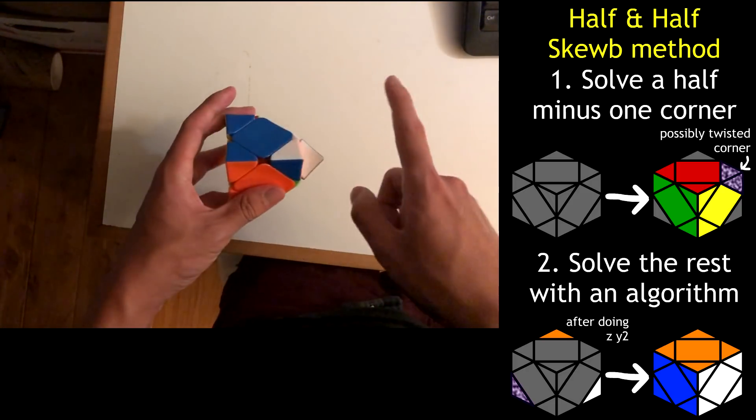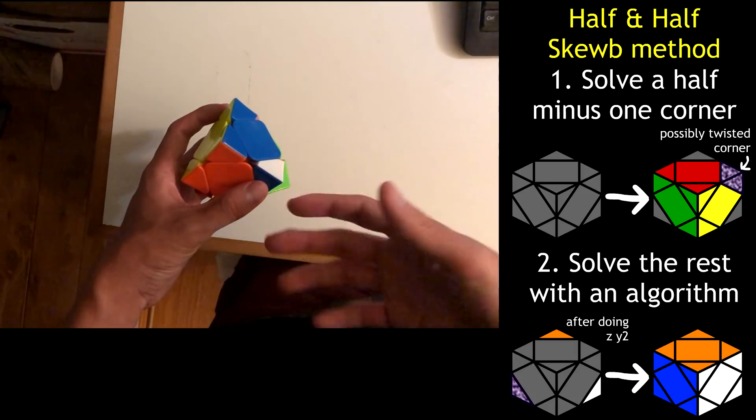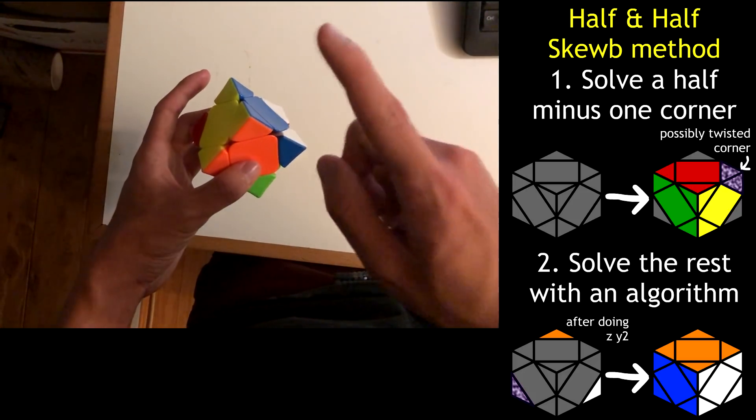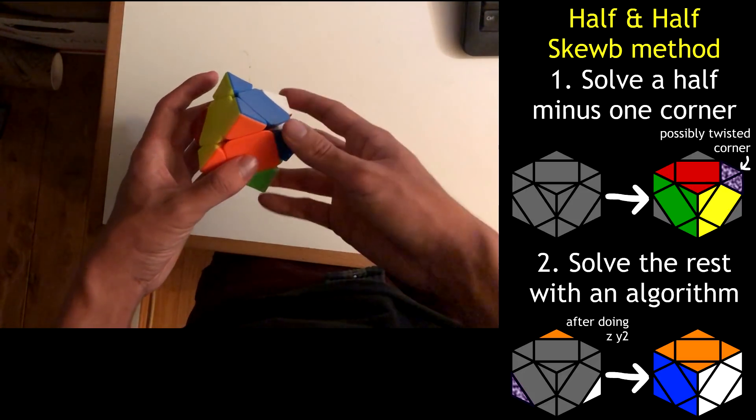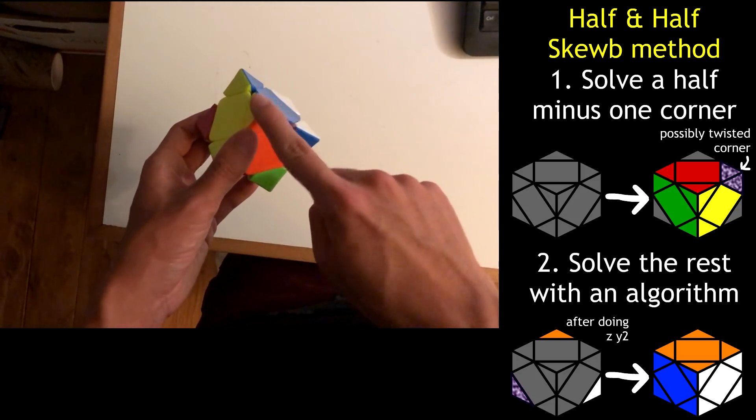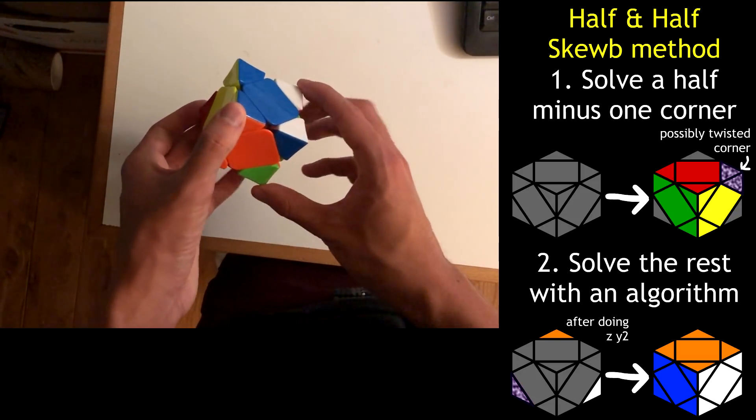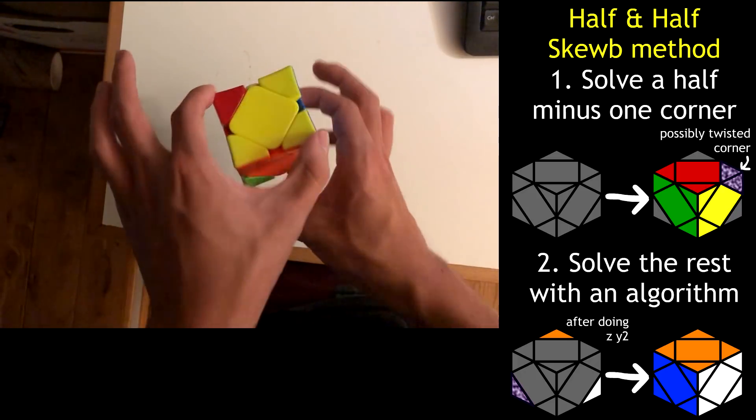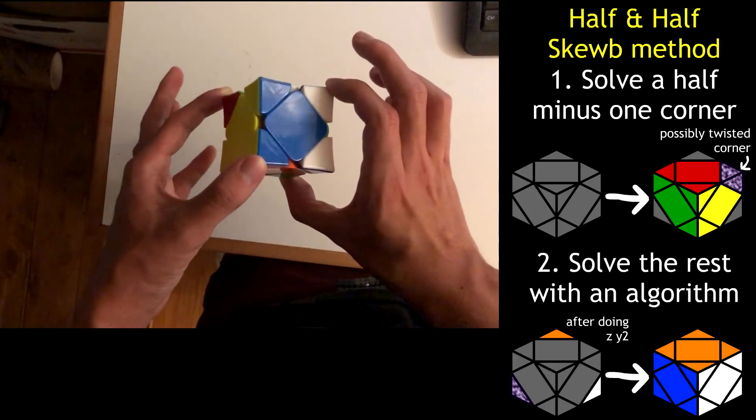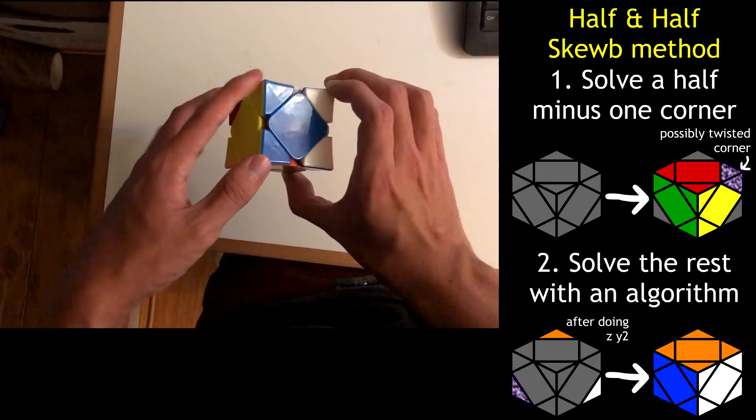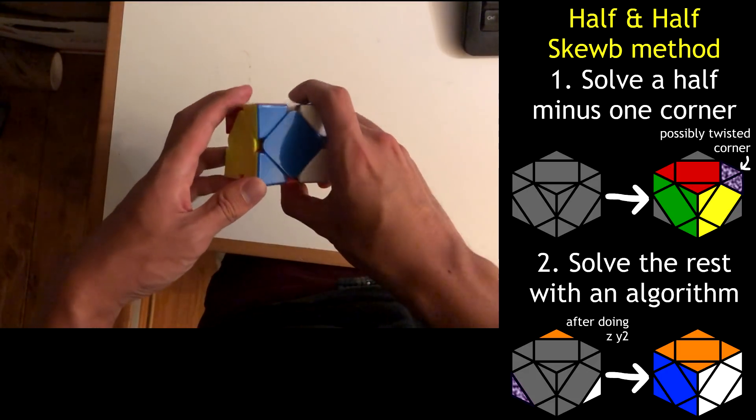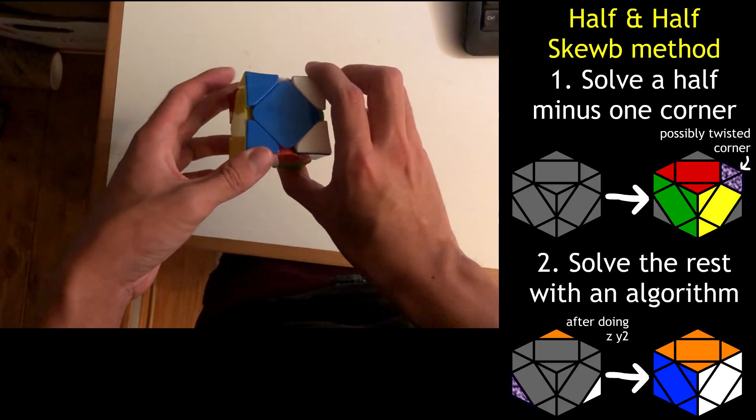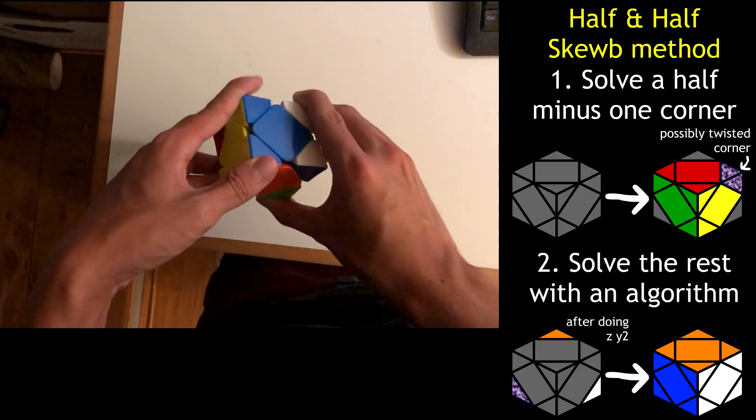On to step two. But before we get to step two, I want to point something out. It kind of blew my mind when I first realized it, and it makes this method a lot easier. So it turns out, the corners of a skew move in sets of four. What do I mean by that? Well, if you look at any corner like this one, and look at the three corners diagonal to it, like the ones I'm touching right now, these four actually stay in this rigid configuration relative to each other, and don't move. Any possible turn of the skew just rotates the corners, but position-wise, they stay rigid.